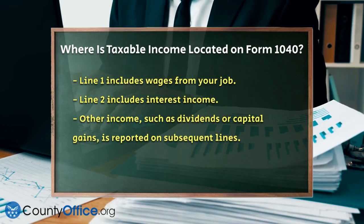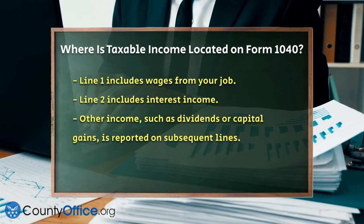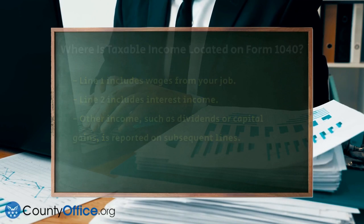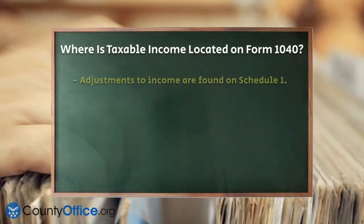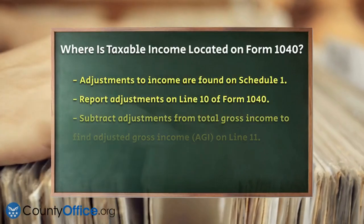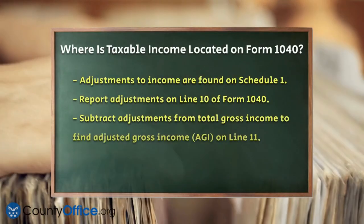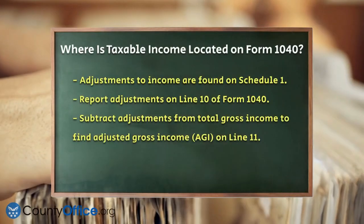Next, you'll subtract any adjustments to income, which are listed on Schedule 1, from your total gross income. This adjustment is reported on Line 10 of Form 1040.